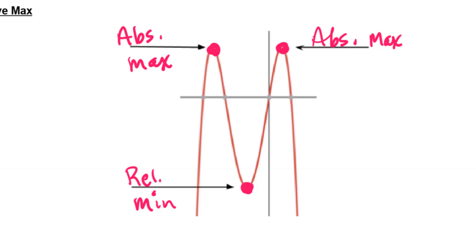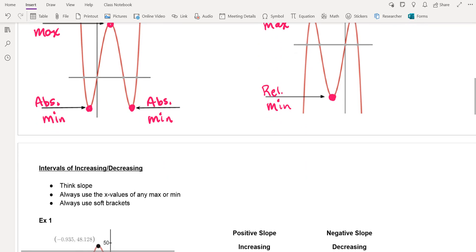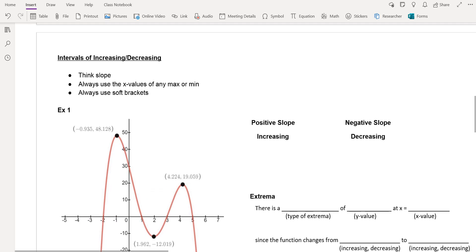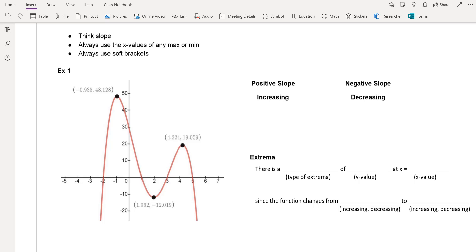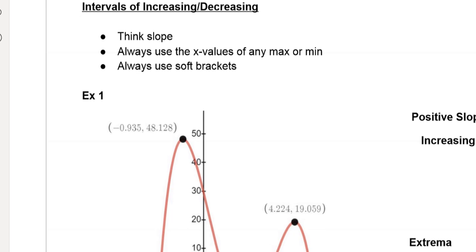When you click on a function, Desmos will give you those values — absolute extrema, whether absolute max or min or relative max or min, as well as your x and y intercepts. Now let's talk about increasing and decreasing intervals. Think of slope — there are going to be two types: a positive slope and a negative slope. Always use x-values for the intervals and always use soft brackets.